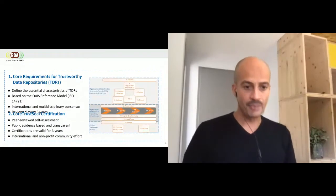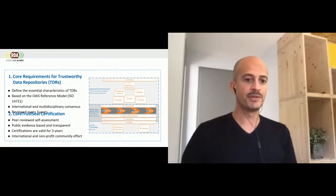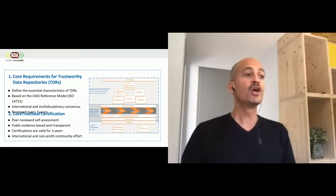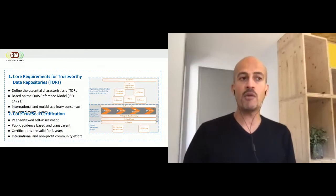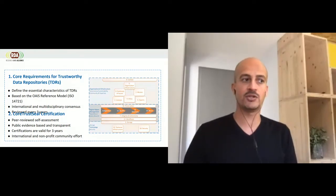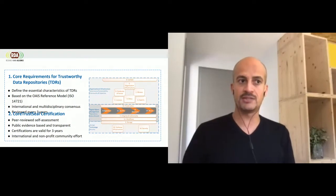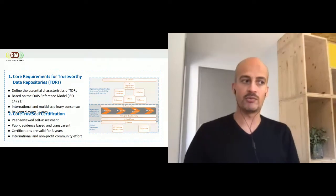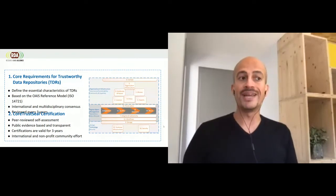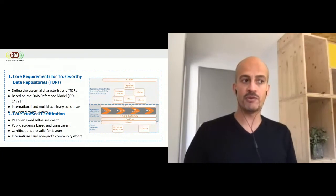CoreTrustSeal is actually two things. First, the 16 core requirements for trustworthy data repositories define the essential characteristics of trustworthy data repositories. They are based and fully aligned with the OAIS — the Open Archival Information System Reference Model — which is an ISO standard. They take a holistic approach to trustworthiness, covering the governance and organizational infrastructure of the repository, the digital object management the repository performs, and the technology underlying the repository. The requirements are built on an international consensus involving a large number of digital repository communities representing diverse research communities and types of repositories. Second, the CoreTrustSeal uses the core requirements as a basis for a certification procedure. The certification is based on a peer-reviewed self-assessment with public evidence. It is a completely transparent process, with successful certifications made publicly available and renewed every three years.